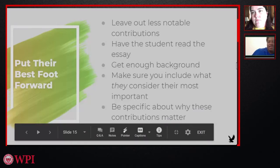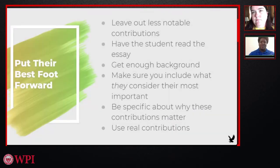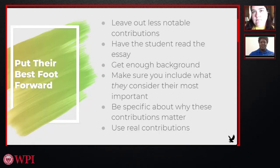When writing the essay, in addition to being specific and including detailed examples, you want to leave out less notable contributions. Some of the strongest Dean's List candidates have done so many things, and you've only got 4,000 characters. So make sure you're leading with the things that are most important — not just for your team, but also for your student. If there's a small role they had, you can mention it if you have the characters, but don't spend time highlighting a role that wasn't as major as some of their other contributions and wasn't as important to them.